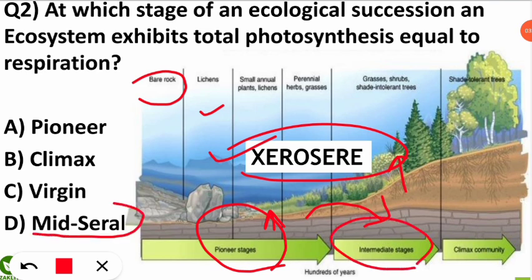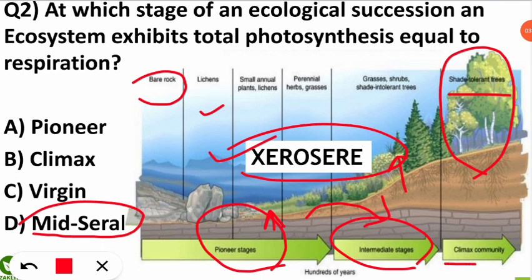Finally, when succession is completed, big shade-tolerant trees develop in that area. These species are called the climax community or climax species. In this climax stage, all the photosynthesis being done is equal to the respiration rate.